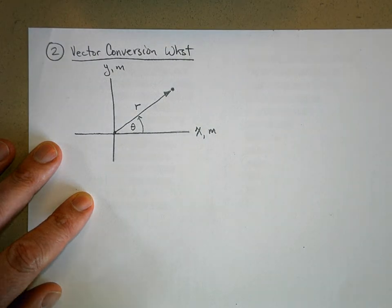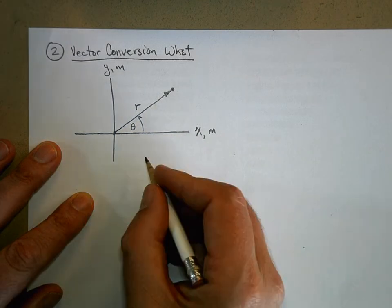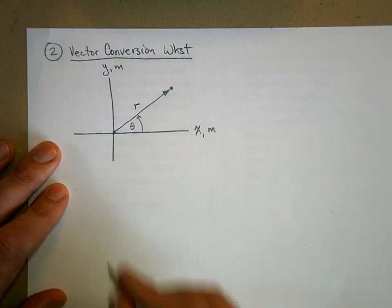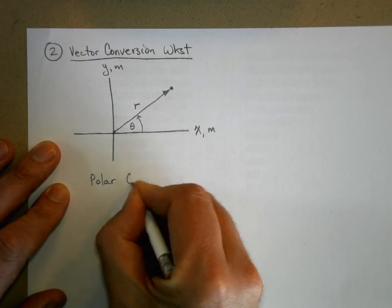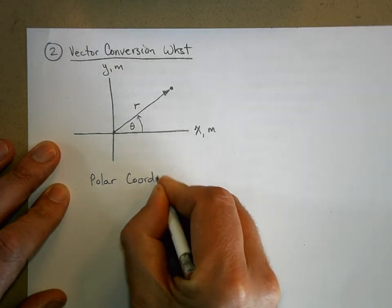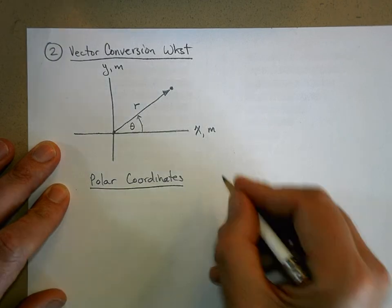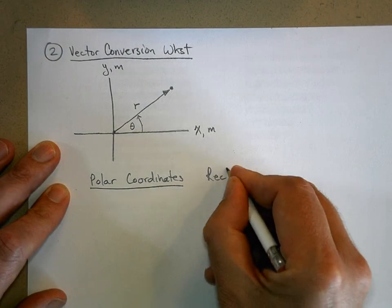So there are two ways of expressing where this object is with respect to the origin. I can use what are called polar coordinates. Or I can use what are called rectangular coordinates.